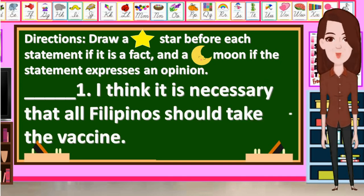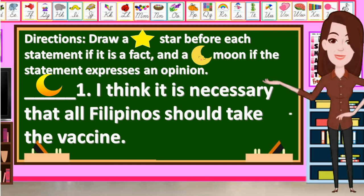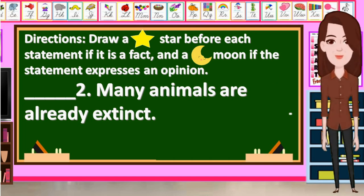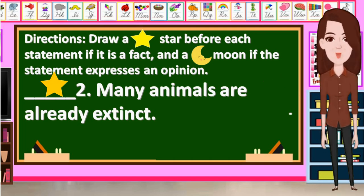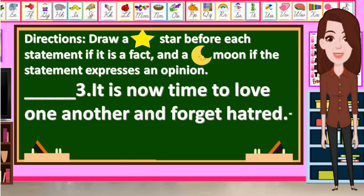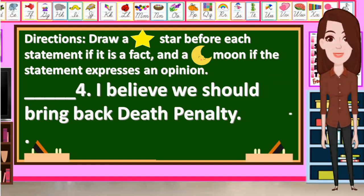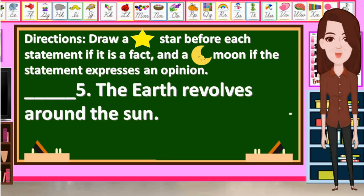Let us check your answers. Number 1: The correct answer is Moon — it is an opinion. Number 2: The correct answer is Star — it is a fact. Number 3: The correct answer is Moon — it is an opinion. Number 4: The correct answer is Moon — it is an opinion. Number 5: The correct answer is Star — it is a fact.